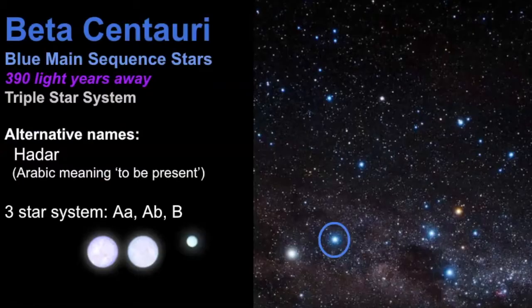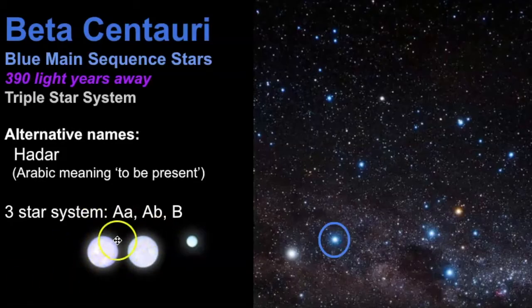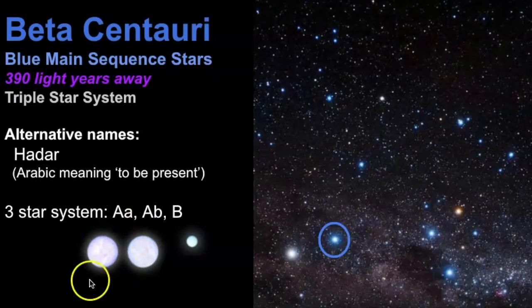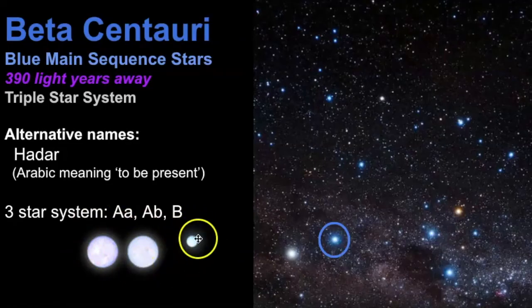Now we'll take a look at Beta Centauri. What's interesting is that Beta Centauri is also a triple system but the structure of it is different. It's much farther away as well — estimated to be 390 light years away — and it has an alternative name of Hadar, an Arabic term meaning 'to be present.' There are three stars in this system: Beta Centauri AA, AB, and B. They are all blue main sequence stars but differ in size: AA is about 12 solar masses, AB is about 10 solar masses, and B is 4 solar masses.